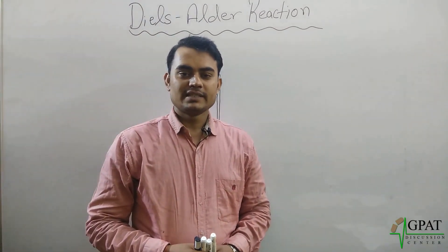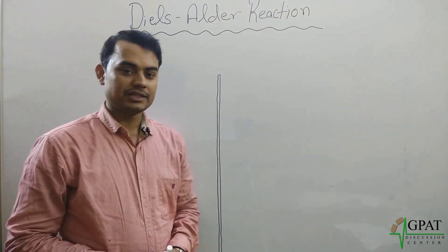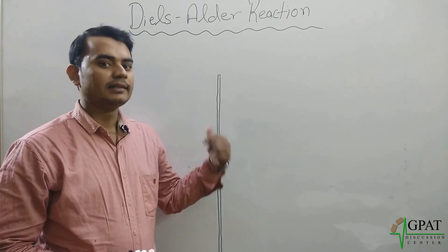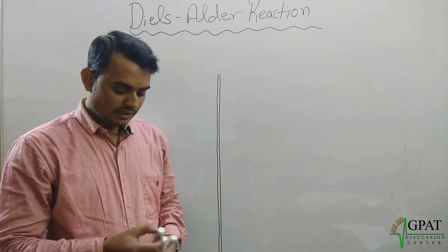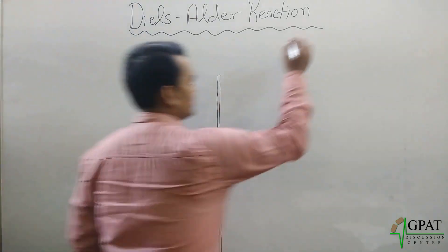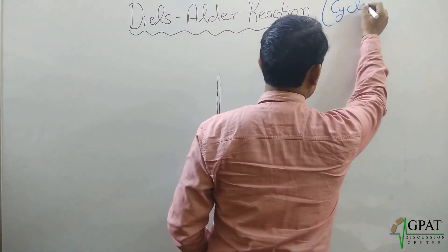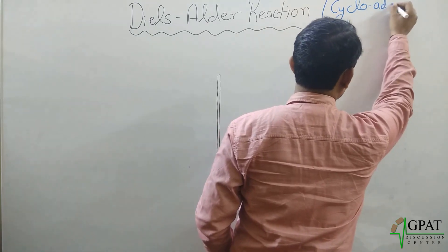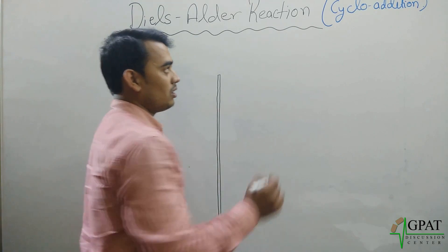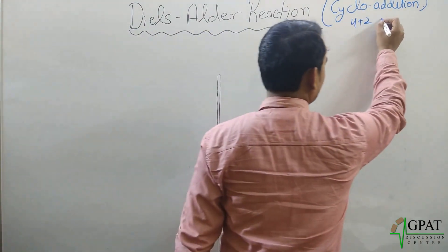Welcome once again in the series on named reactions of organic chemistry. Today I'm going to discuss a very important named reaction — that is the Diels-Alder reaction. The Diels-Alder reaction is basically a reaction also called a cycloaddition reaction, or it's also called a 4+2 addition.